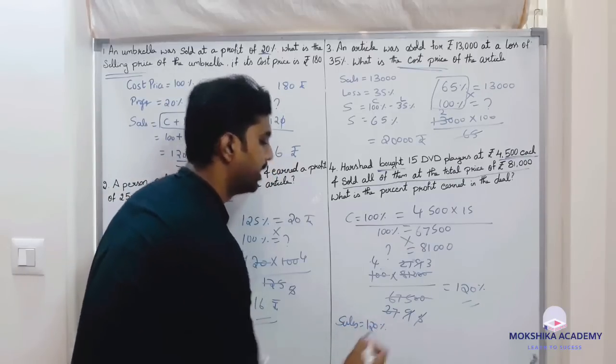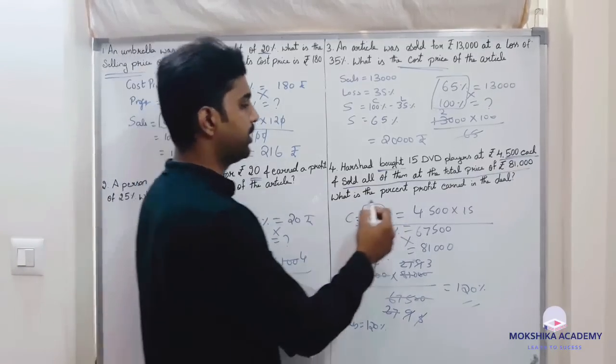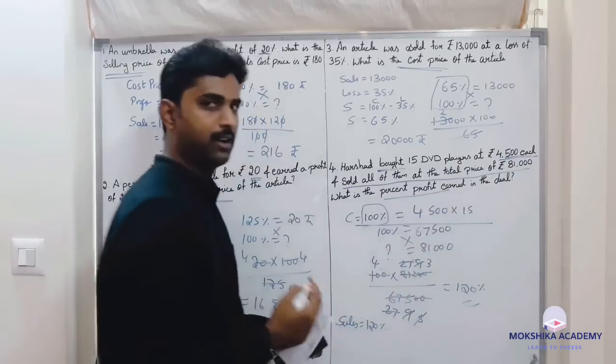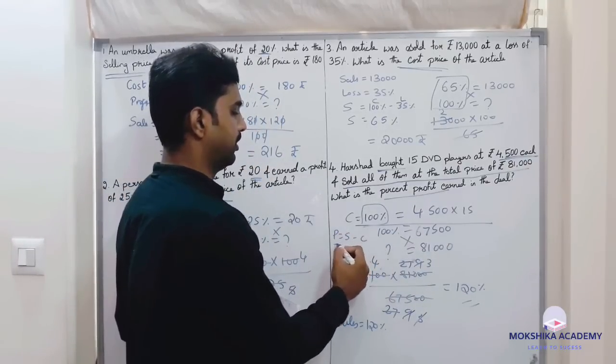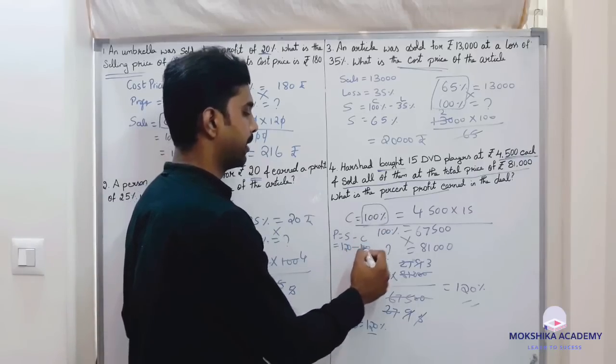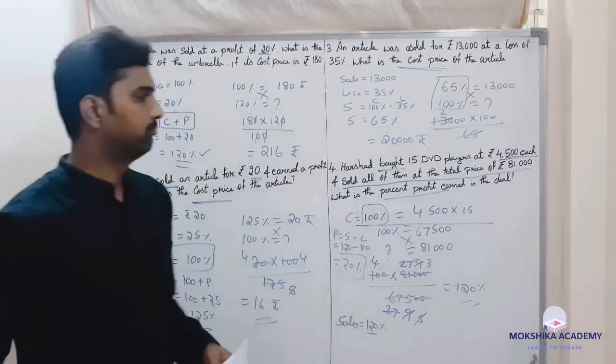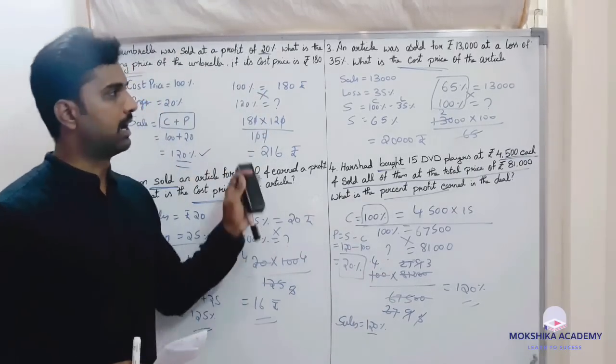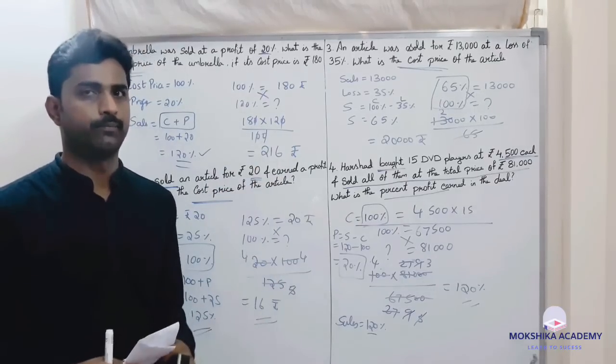What we found now is sales. Sales is how much? 120 percent. Cost is 100 percent. And now what we need to do? Percent profit. Profit, you know: sales minus cost. Sales is 120 percent, cost is 100 percent, profit is 20 percent. So this is how you can easily solve this type of questions.